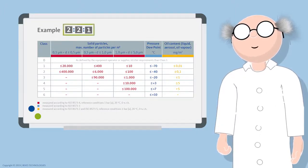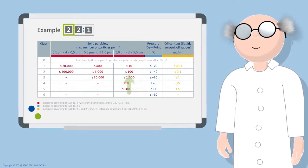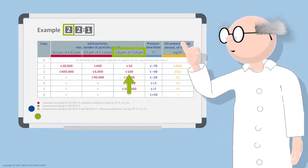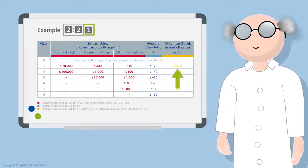As a reminder, please refer to the table again. With a compressed air quality of 221, there may be less than 100 particles with the size of 1 to 5 micrometers in 1 cubic meter of compressed air. The residual oil content in this cubic meter is limited to a maximum of 0.01 milligrams.